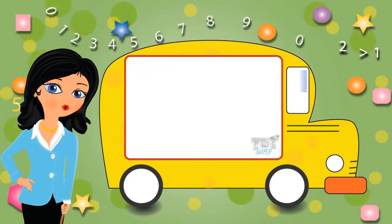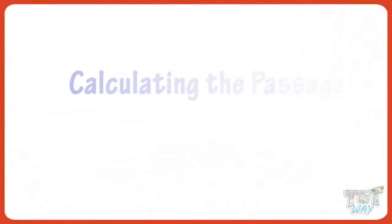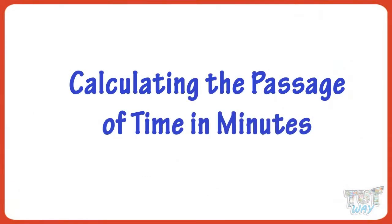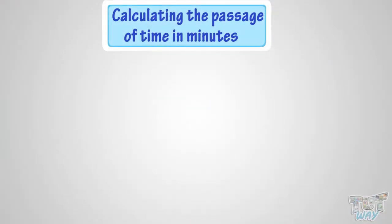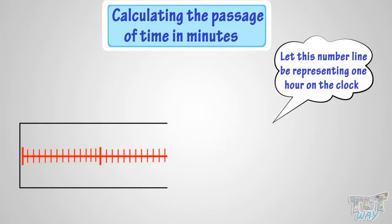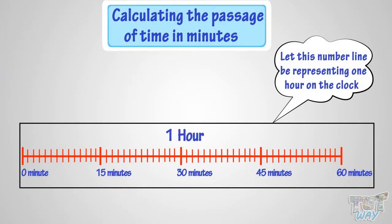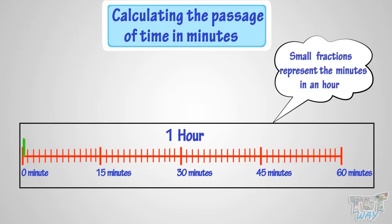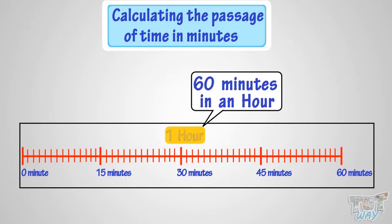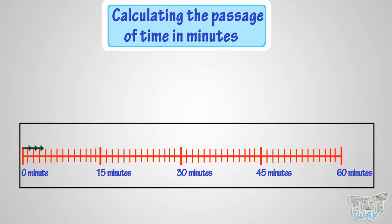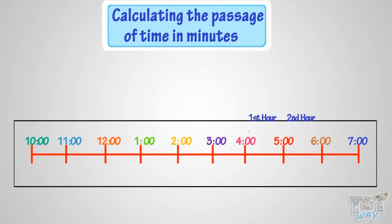Hi kids! Now let's learn calculating the passage of time in minutes. Let's see how you can figure it out. Let this number line represent one hour on the clock, and small fractions represent the minutes in an hour. You know already that there are 60 minutes in an hour. Now hop and count the leaps to calculate the minutes past, as you did to count the hours past.